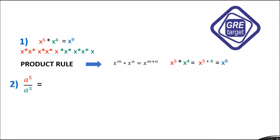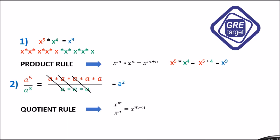Example 2: a raised to 5 divided by a raised to 3. Without rules, we write out 5 times a divided by 3 times a and cancel common terms to get a squared. Using the quotient rule — x raised to m divided by x raised to n equals x raised to m minus n — we get a raised to 5 minus 3, which equals a squared. The second method is easier.